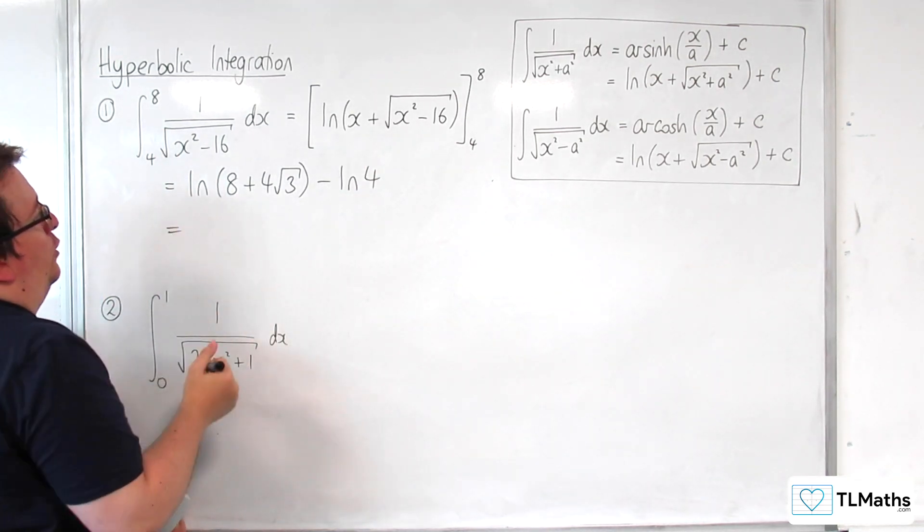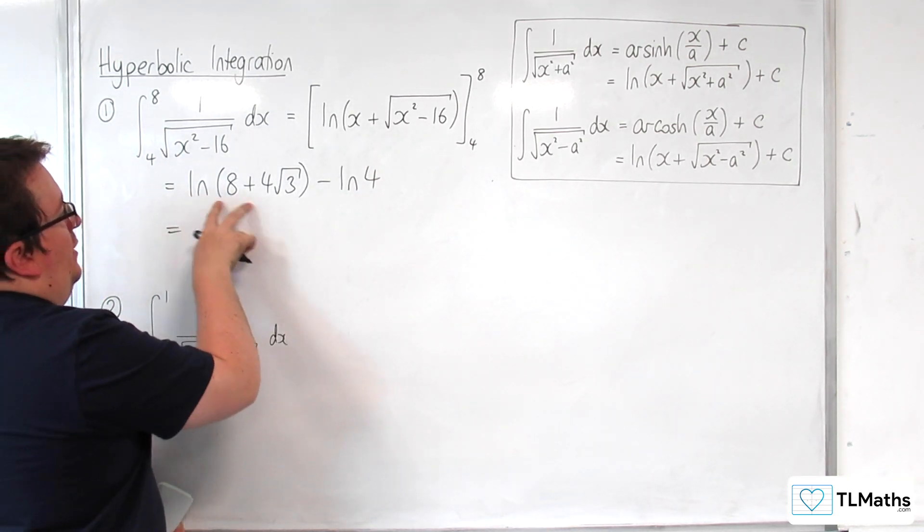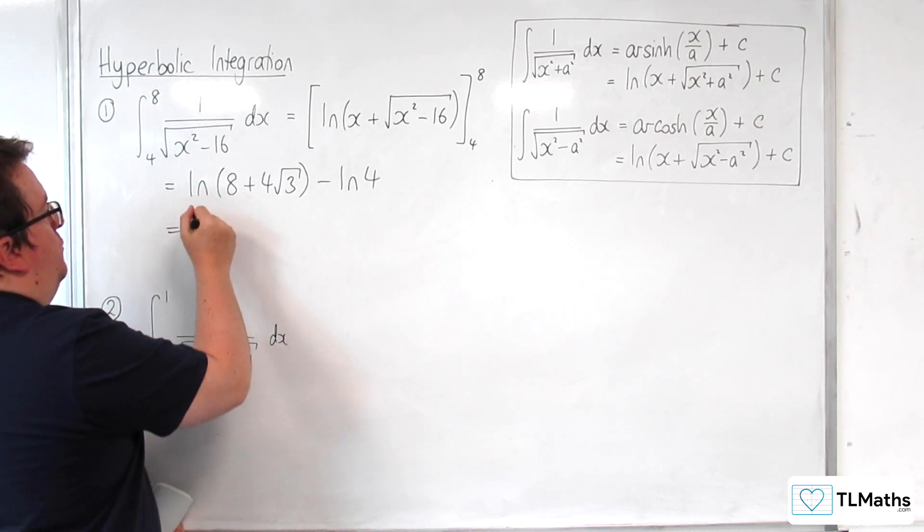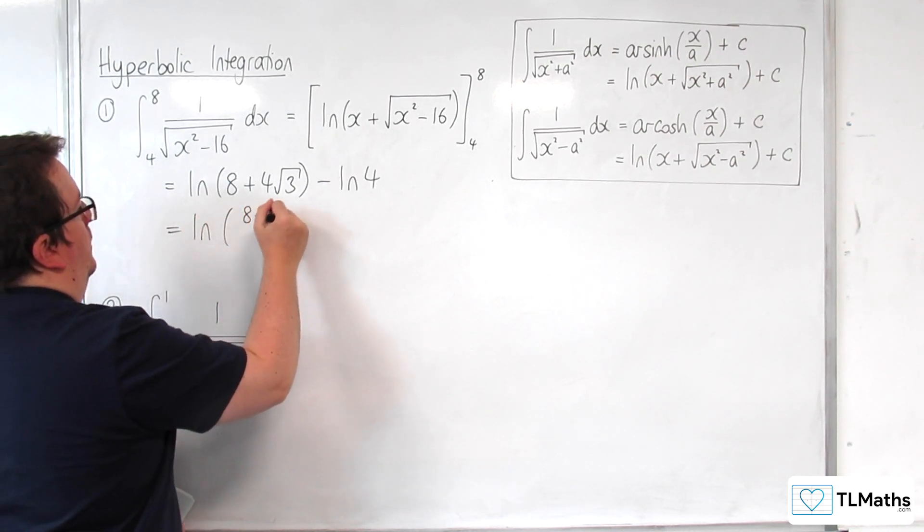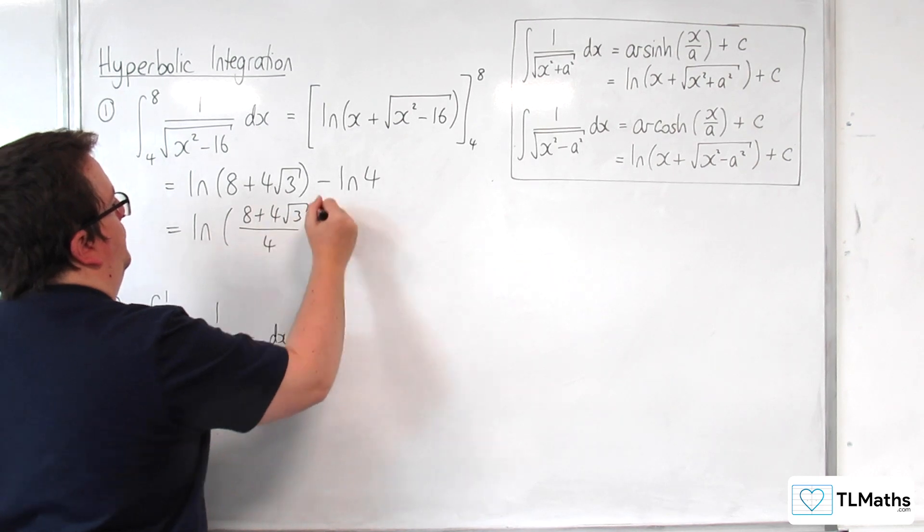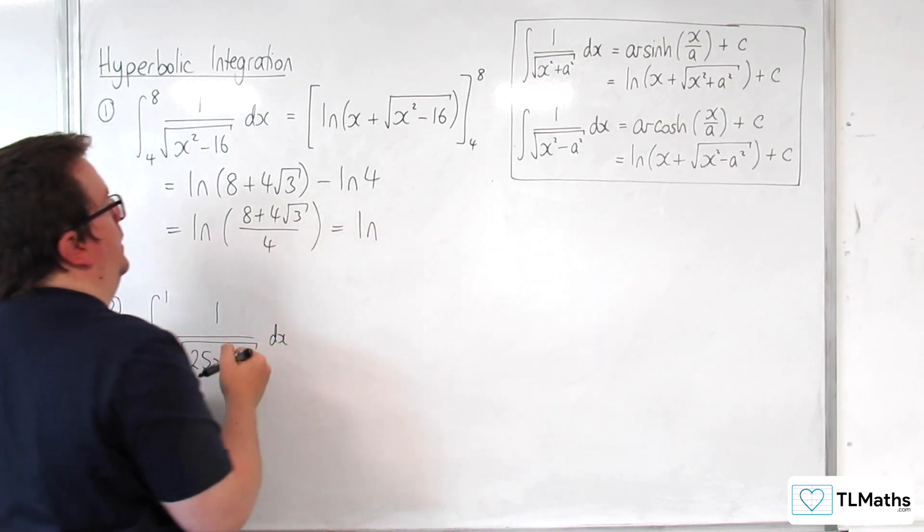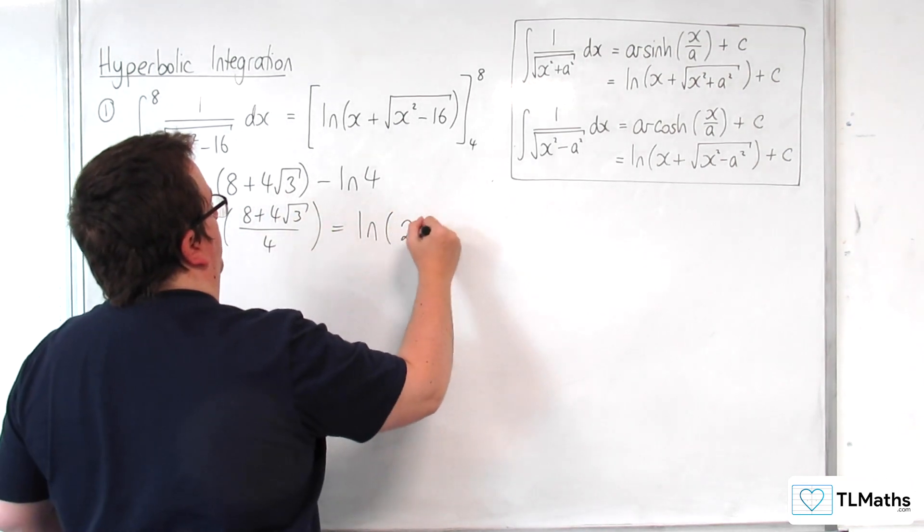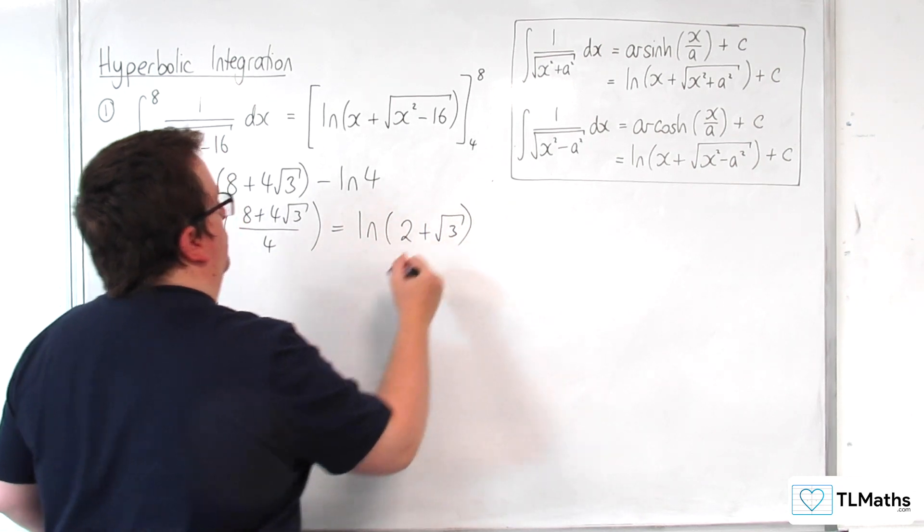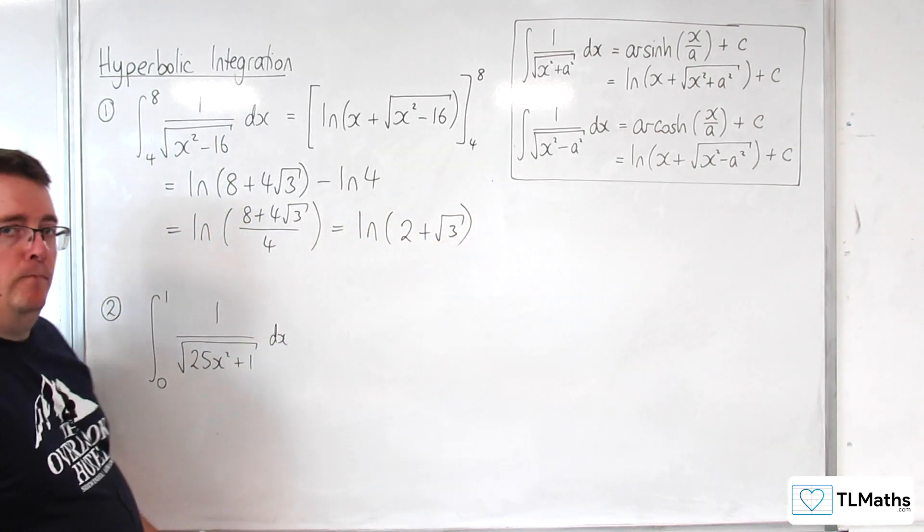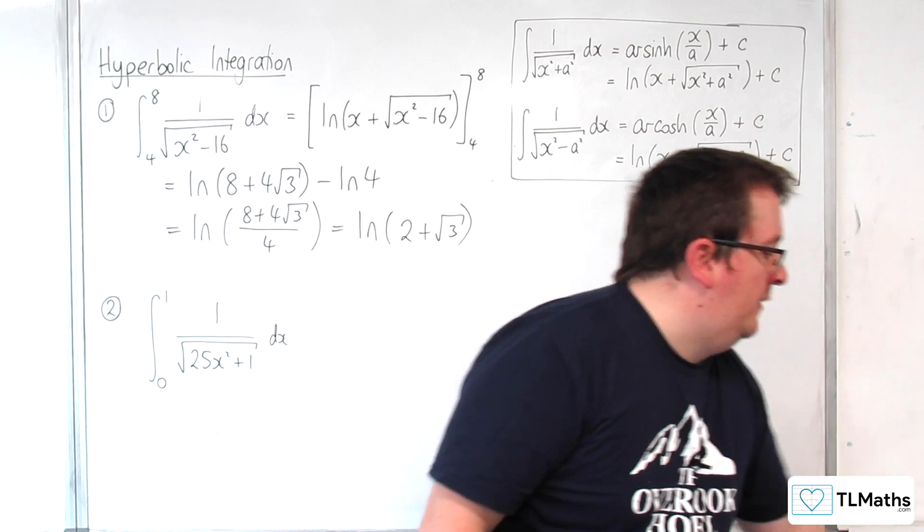Then we can use the log laws, which gives us log of 8 plus 4 root 3 over 4. So that's the natural log of 2 plus root 3. That would be my exact answer.